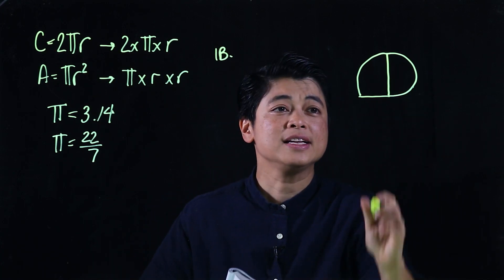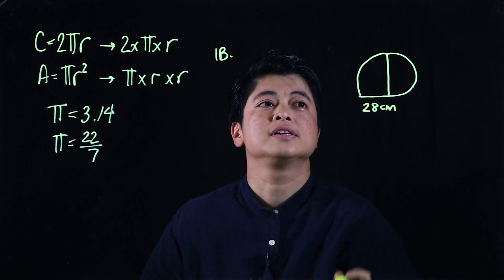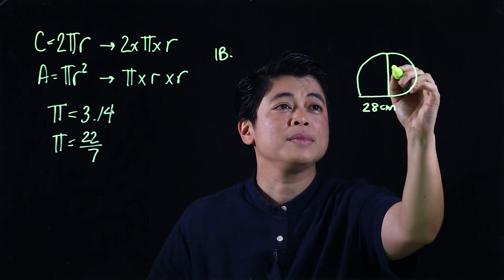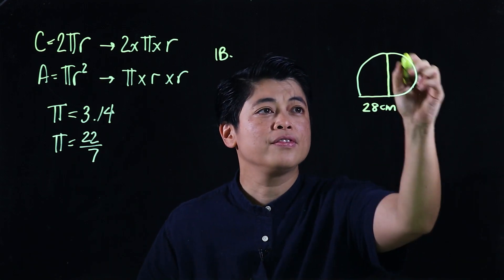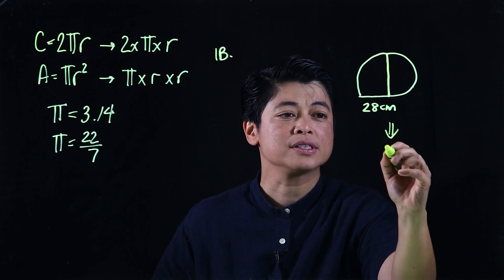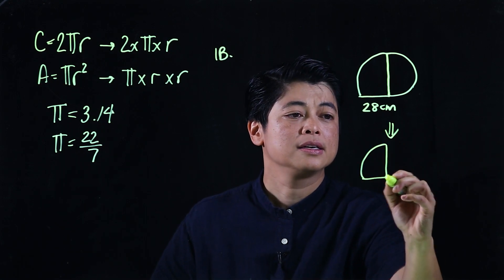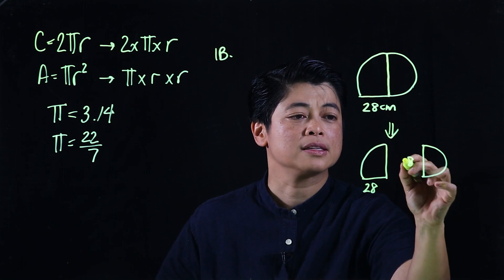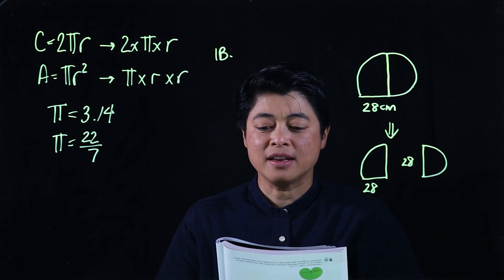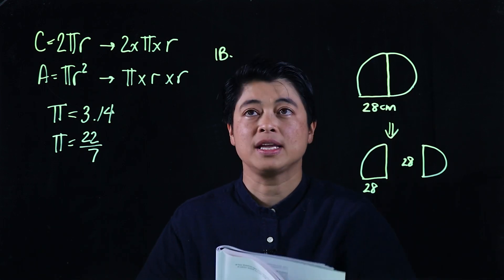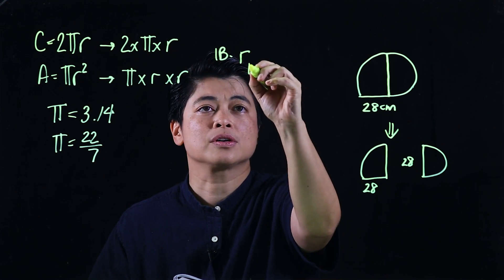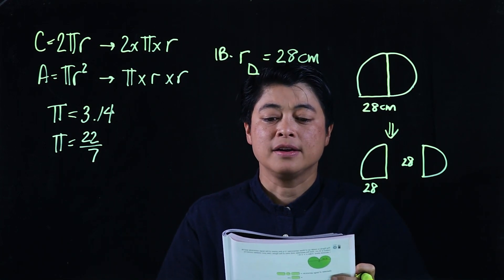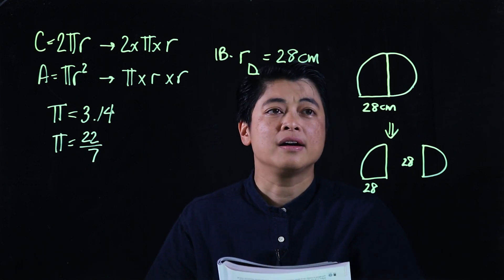The measurement given is 28 centimeters. Since this is a quarter circle and this is a semicircle, this here is the diameter of the half circle — so that's 28, meaning this is also 28. The radius of the quarter circle is 28 centimeters. The problem asks us to find the perimeter and the area of the mat.